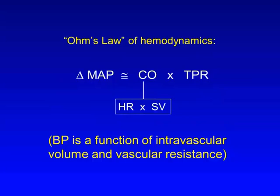In order to understand this, first let's look at this basic formula of hemodynamics, which we sometimes refer to as the Ohm's Law of Hemodynamics. This says that the pressure gradient across a vascular bed is proportional to cardiac output and vascular resistance. In other words, the drop in mean arterial pressure across our vascular system from aorta to right atrium is proportional to cardiac output and total peripheral resistance.